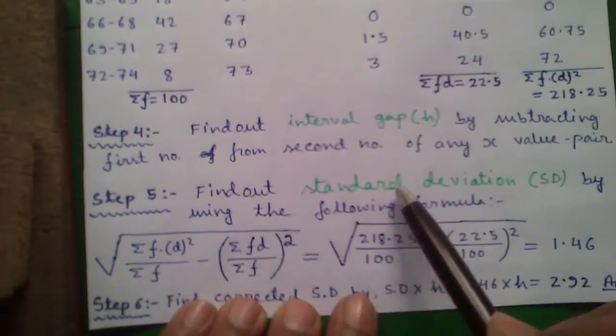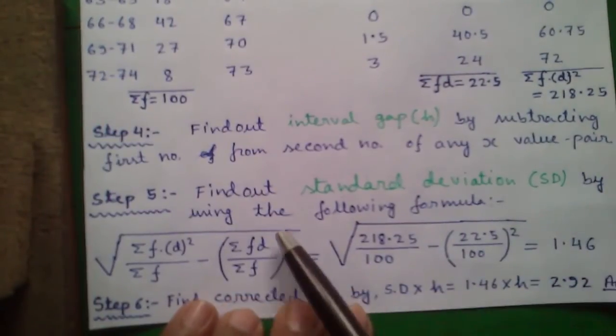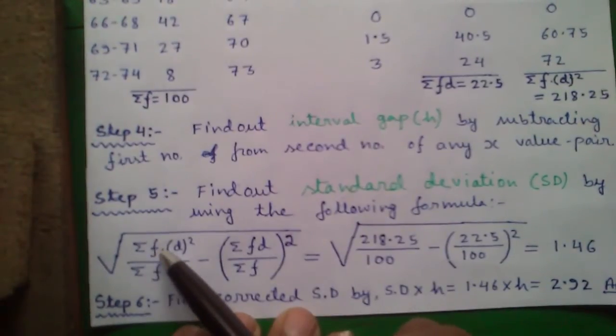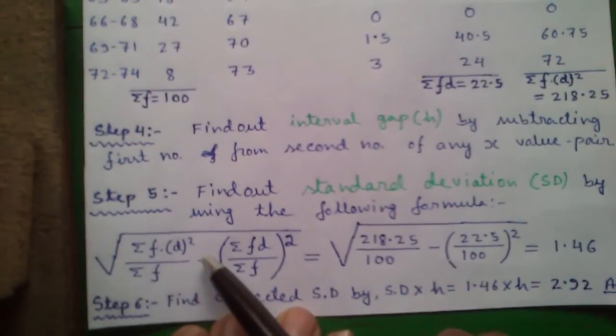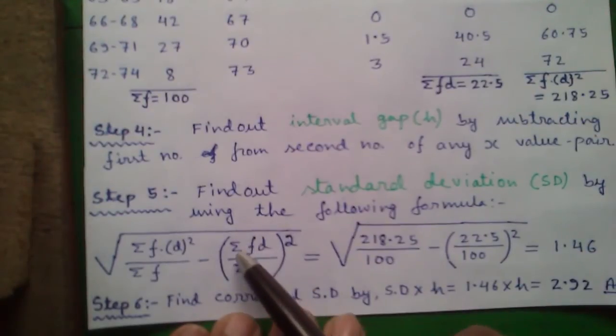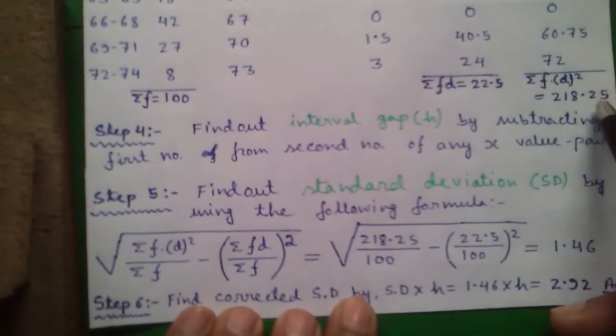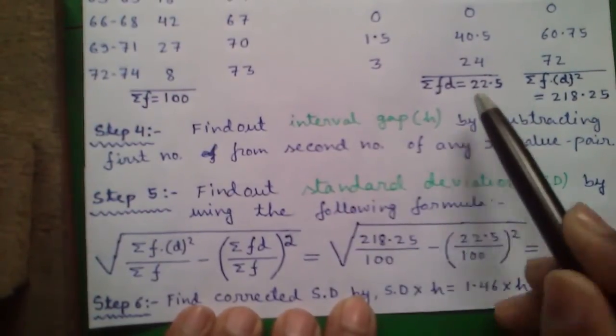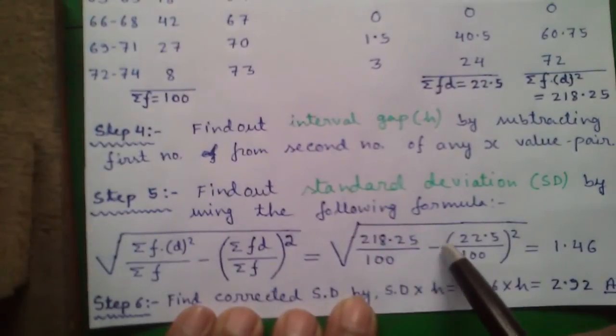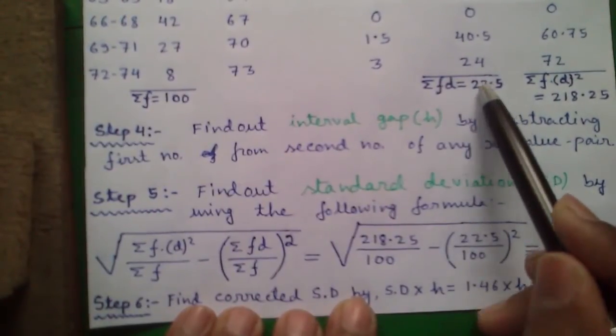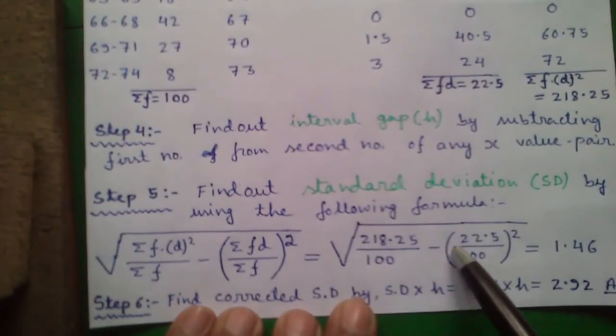Step 5: Find out the standard deviation by using the following formula: root over summation of all fd square divided by summation f minus whole square of sum fd divided by sum f. So our sum of fd square is 218.25 divided by sum of f is 100 minus whole square of sum of fd which is 22.5 divided by sum f which is 100.